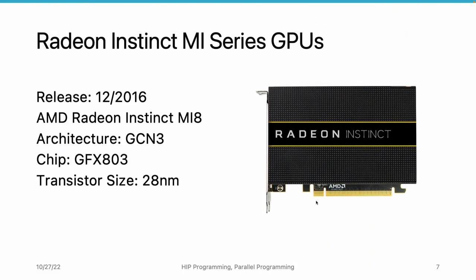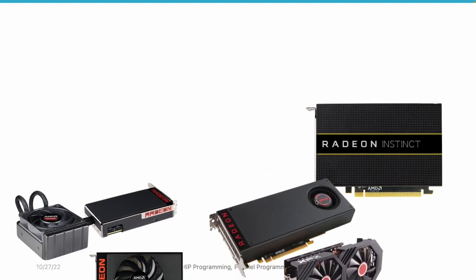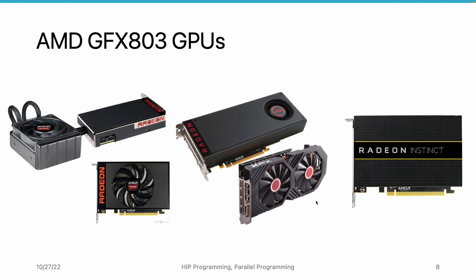We also have the MI series GPUs, actually released before the RX480 GPU. MI stands for machine intelligence — it's another product line focused on general purpose computing. But the internal chip is still GFX803, the architecture is the same, and the transistor size is also the same. This is a great example of the versatility of the GFX803 chip, supporting at least five GPU products. The FuryX GPU is for the high-end gaming market, the RX480/580 is for the mid-range gaming market, and the MI8 GPU is for the general purpose computing market.